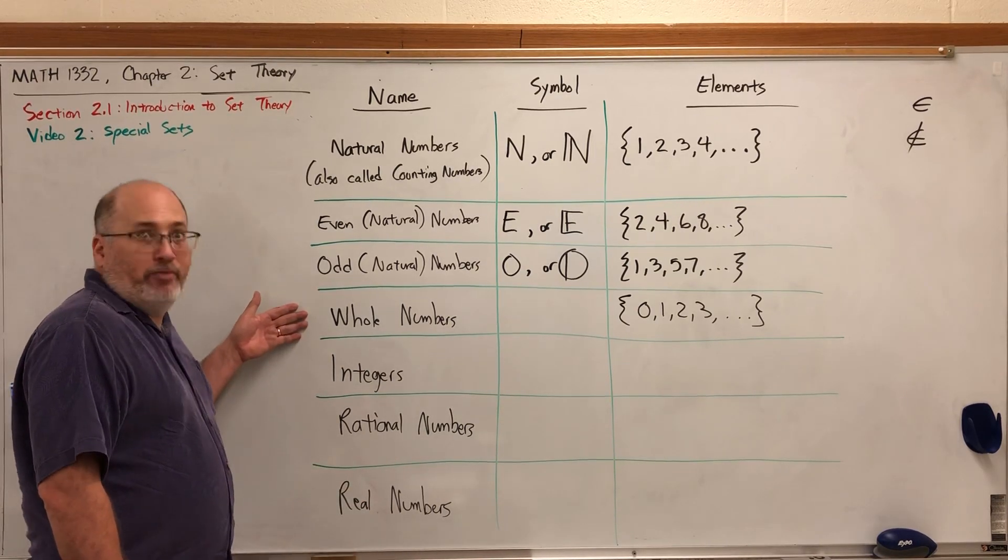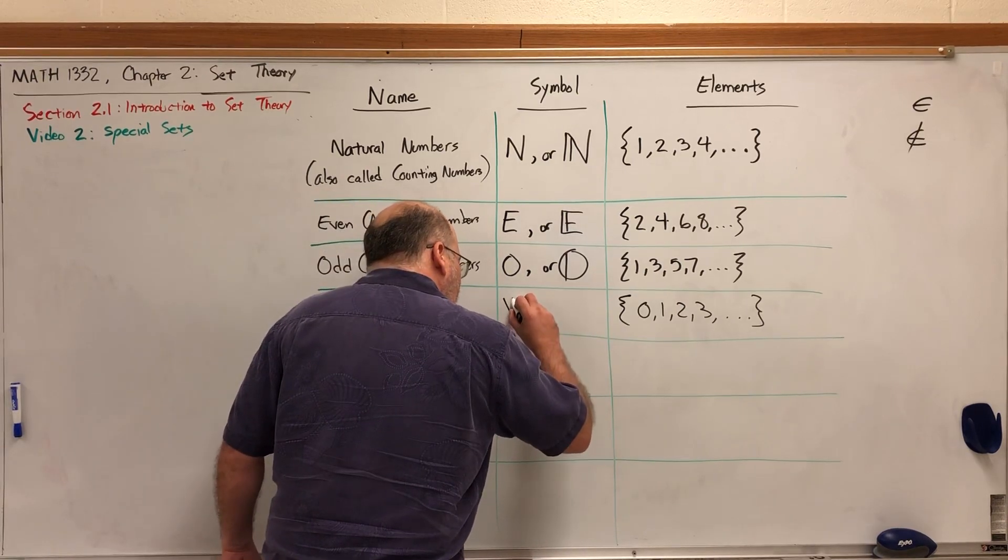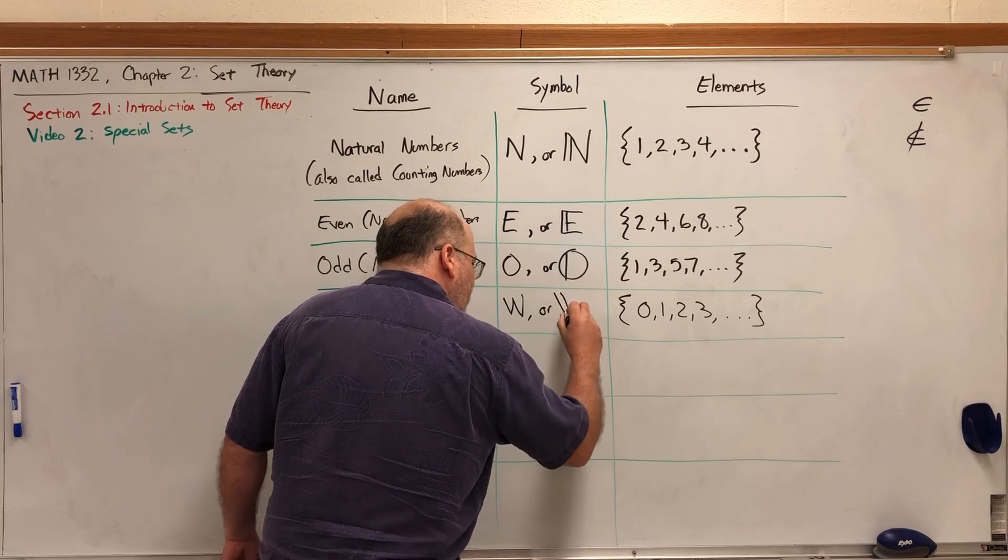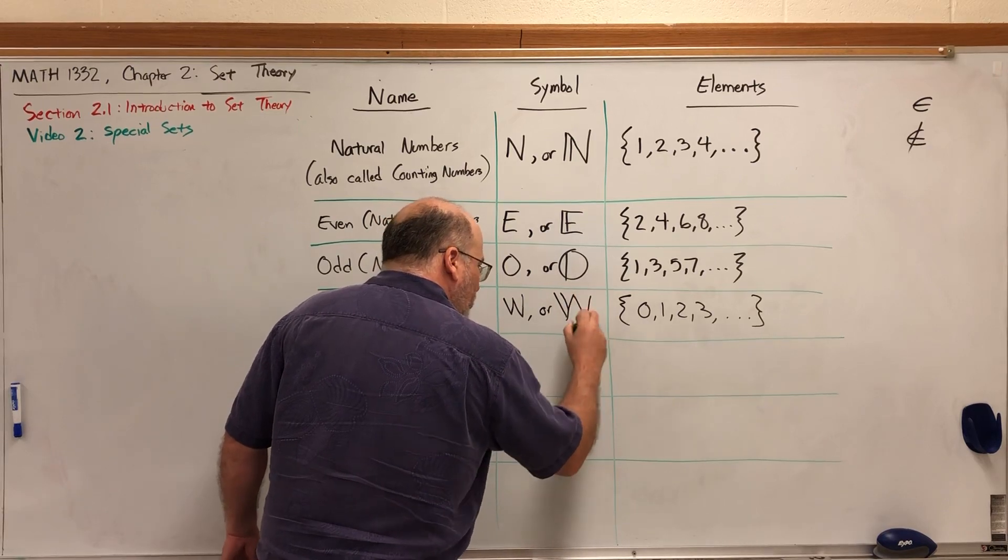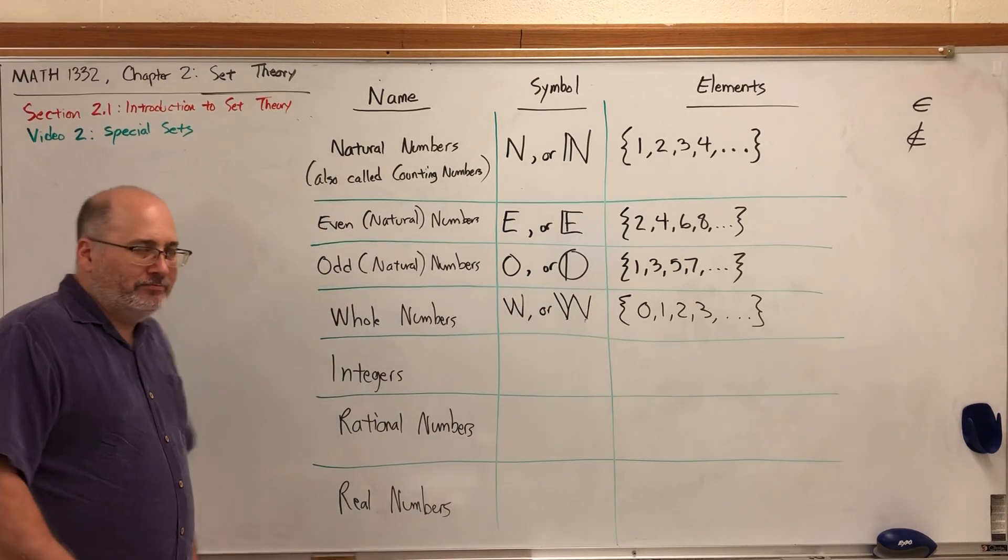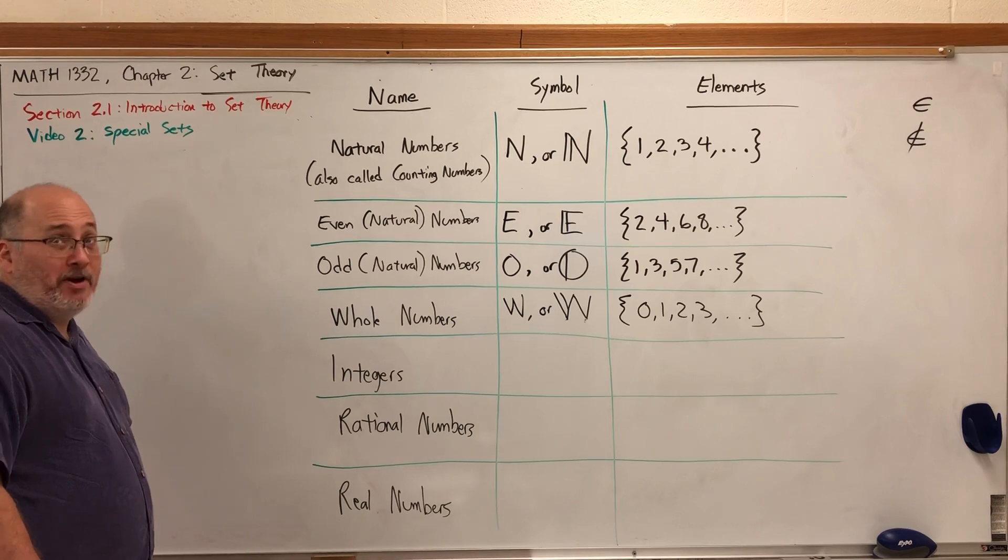The symbol for the whole numbers is capital W or double script W.